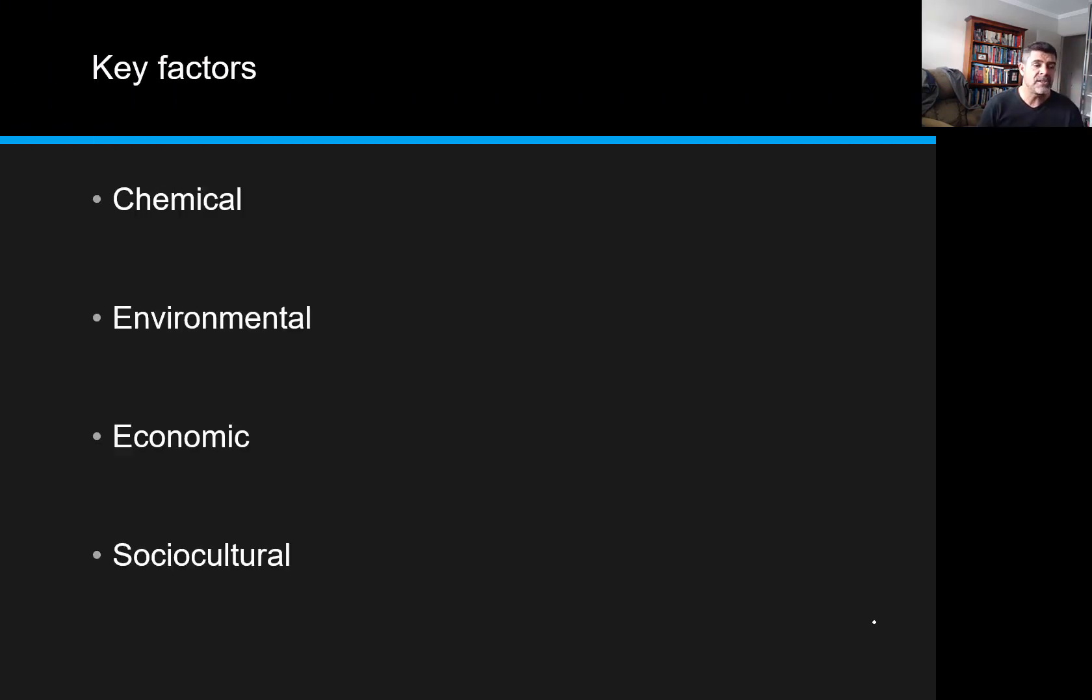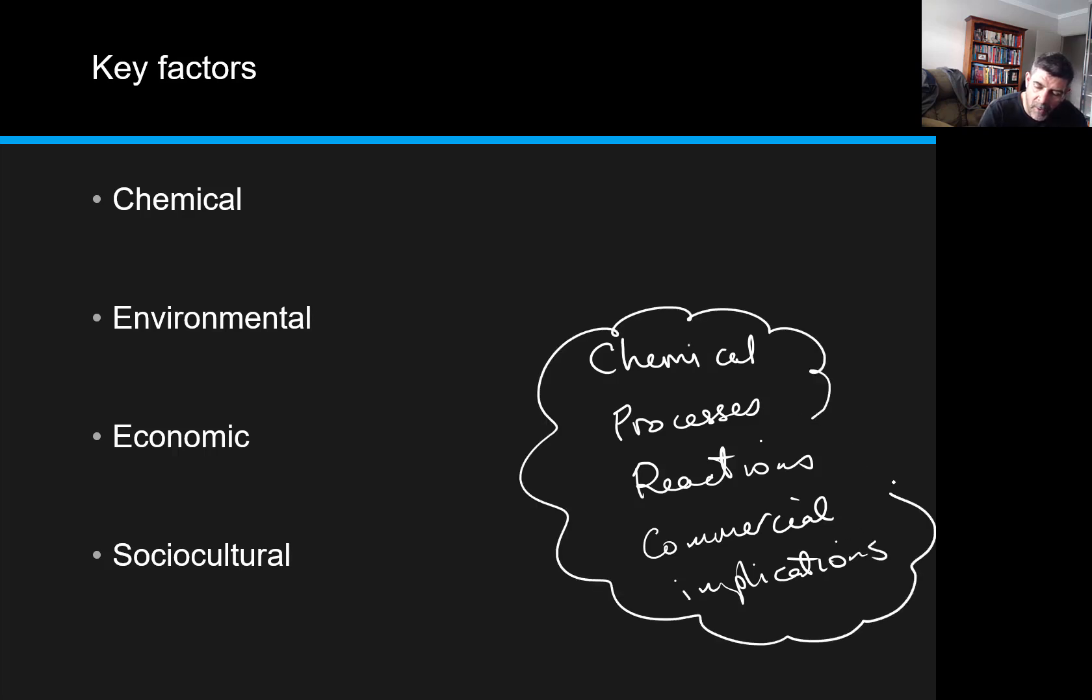There are always going to be, often, four key considerations that we're going to need to think about whenever we are looking at any chemical process. So again, I want you to think about the fact that we're going to look at a number of chemical processes or reactions, some of which have commercial implications, many of which will actually, and consider these from all the key aspects that we have, particularly in relation to these four key factors.